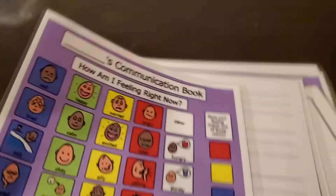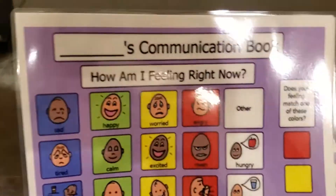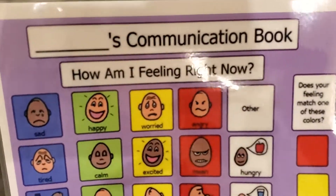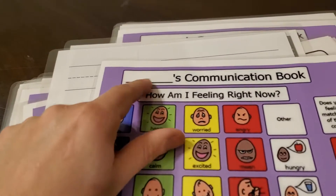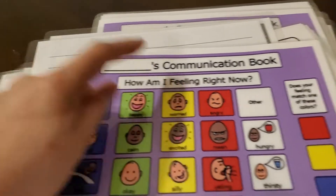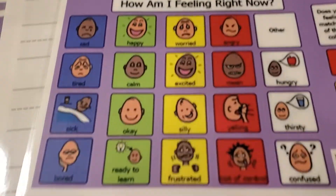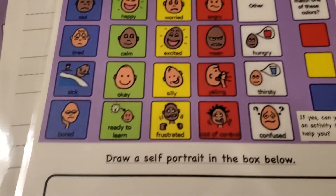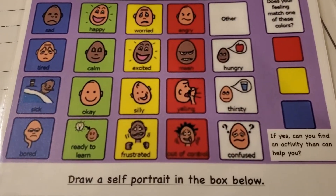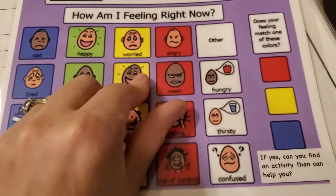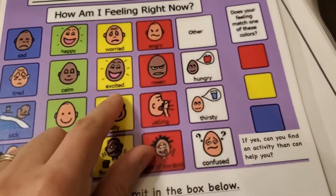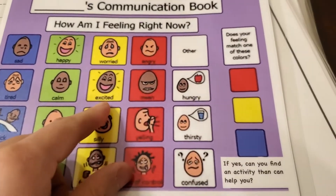The first one is our communication book. So you're going to write your name. This is Teacher Devaney's communication book. How am I feeling right now? Right now, I am excited!